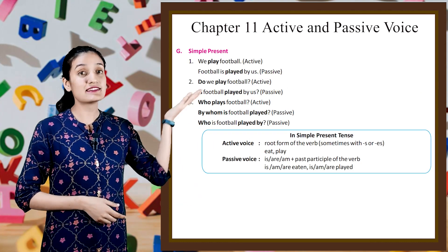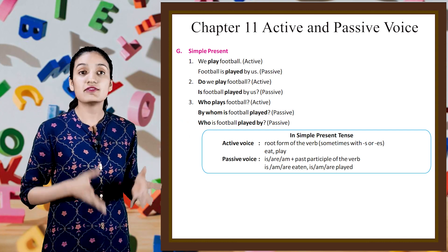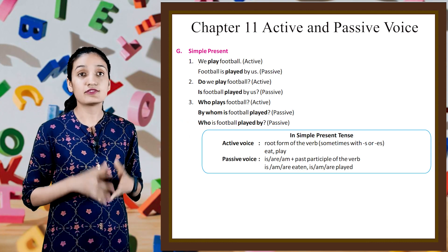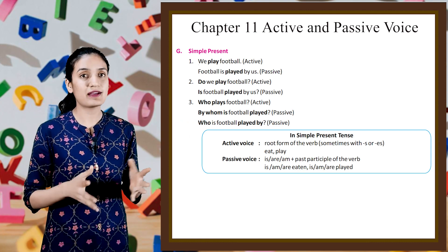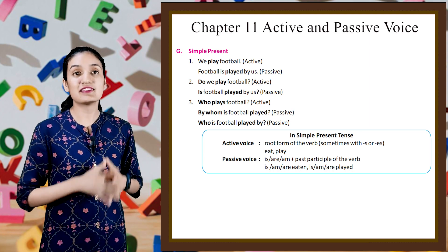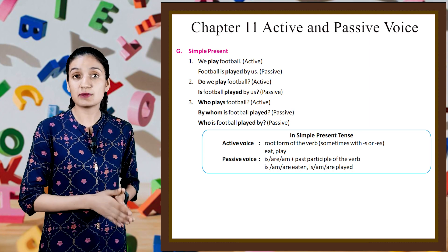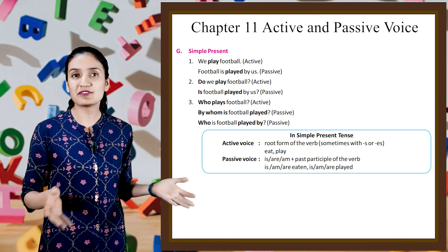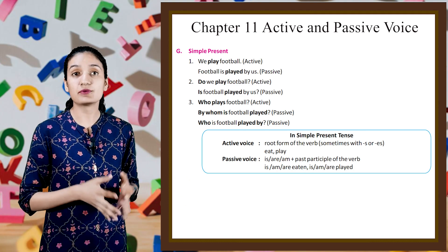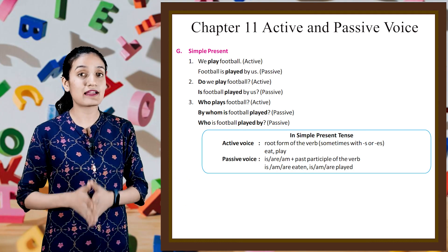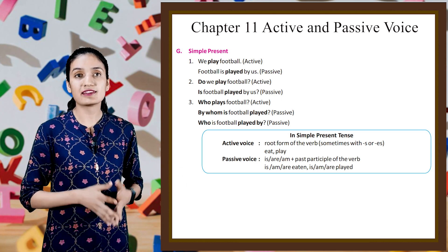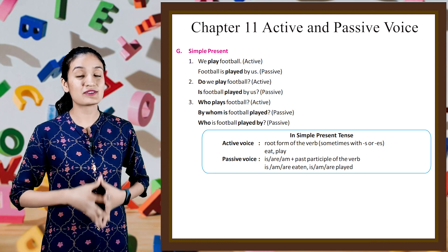Part G — simple present tense. 'We play football' (active) — 'Football is played by us' (passive). 'Do we play football?' (active) — 'Is football played by us?' (passive). 'Who plays football?' (active) — 'By whom is football played?' (passive), or 'Who is football played by?' (passive).